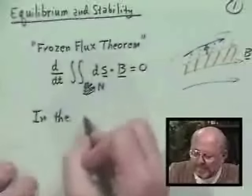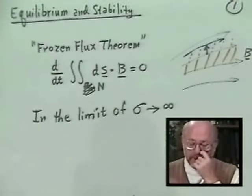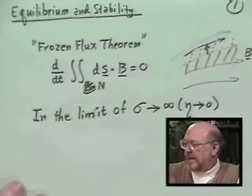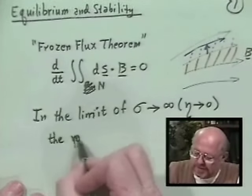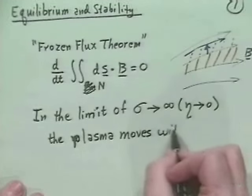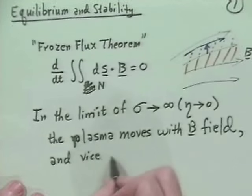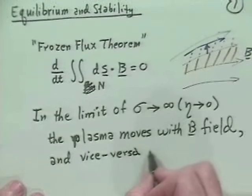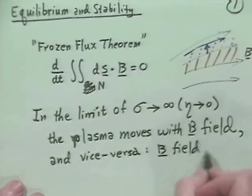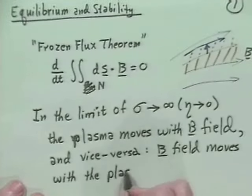What this means is that in the limit of infinite plasma conductivity — that is, the plasma is more or less a superconductor, or resistivity goes to zero — the plasma moves with the magnetic field lines, and vice versa, the B field moves with the plasma. The same number of flux lines per number of particles is the basic idea.